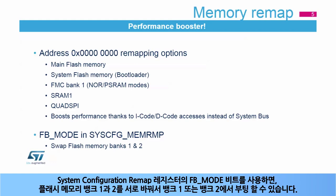The FB mode bit in the system configuration remap register allows you to swap flash memory banks 1 and 2, which allows you to boot either from bank 1 or from bank 2.